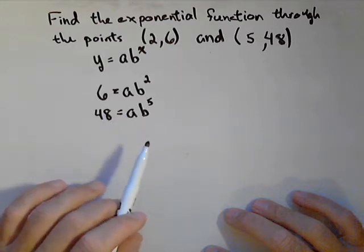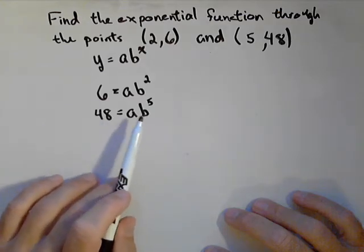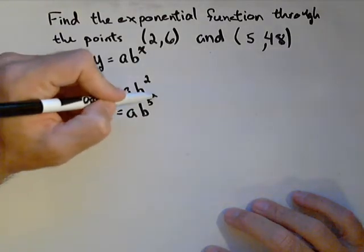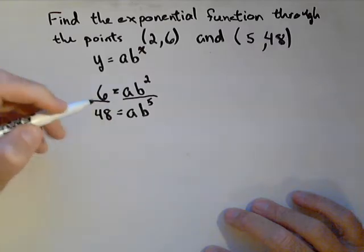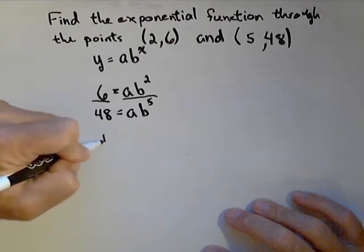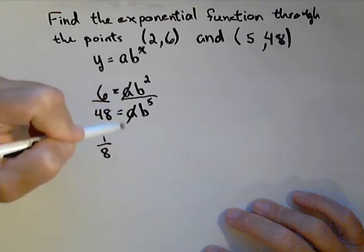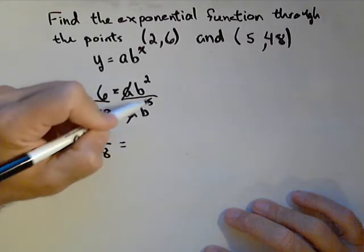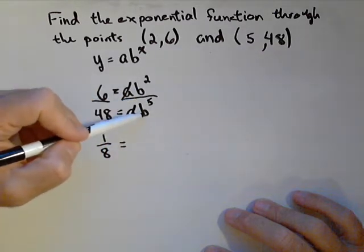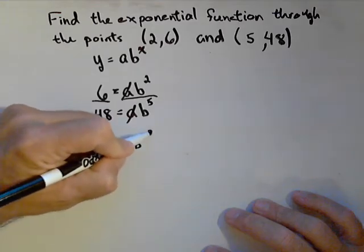Now, we've seen with linear equations, we can do elimination by adding or subtracting. With exponential, because we have a common ratio that makes a function exponential, we do elimination with dividing. So I am gonna divide both sides of the equation. I have six over 48, which reduces down to one-eighth. And over here, look what happens. Here's my elimination, because the a's cancel. Now I have b squared over b to the fifth. Remember, two things of the same base, their exponents subtract. So that's b to the negative third.